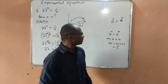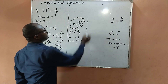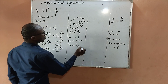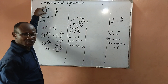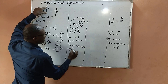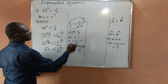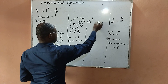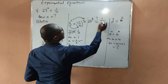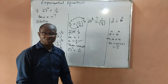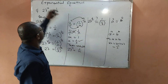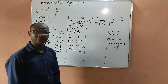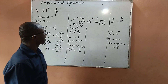Now in this brief video, let us test the result by putting the value of x back into the given question. We are given that 27 raised to power x equals 1 over x. Since x is 1 over 3, I will write 27 raised to power 1 over 3 equals 1 over 1 over 3. I have replaced x with 1 over 3 to check whether the left-hand side equals the right-hand side, which would authenticate that x equals 1 over 3.